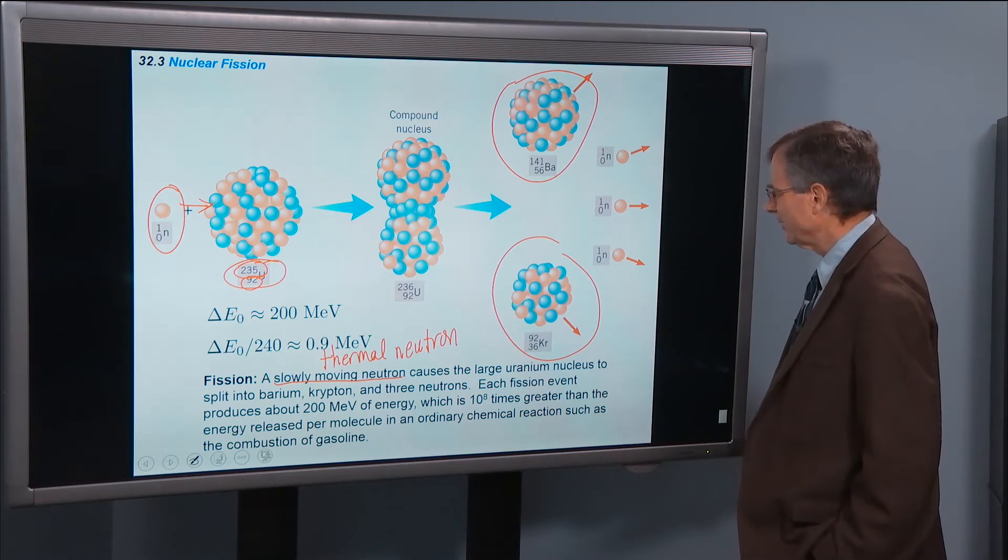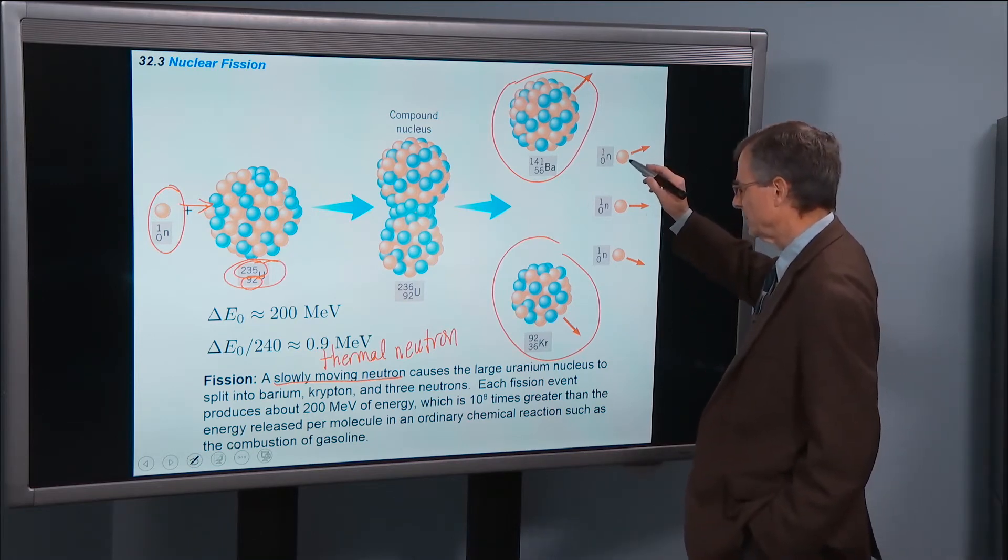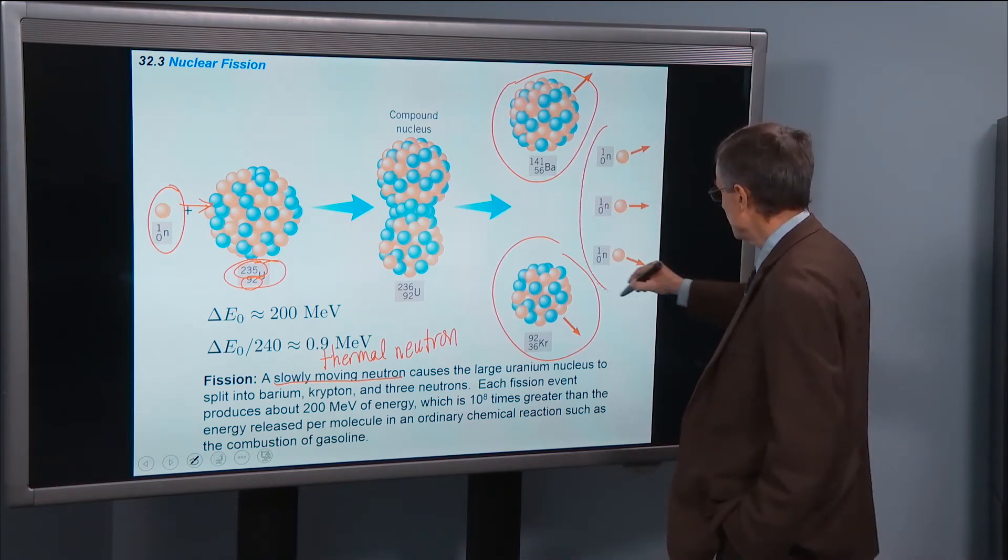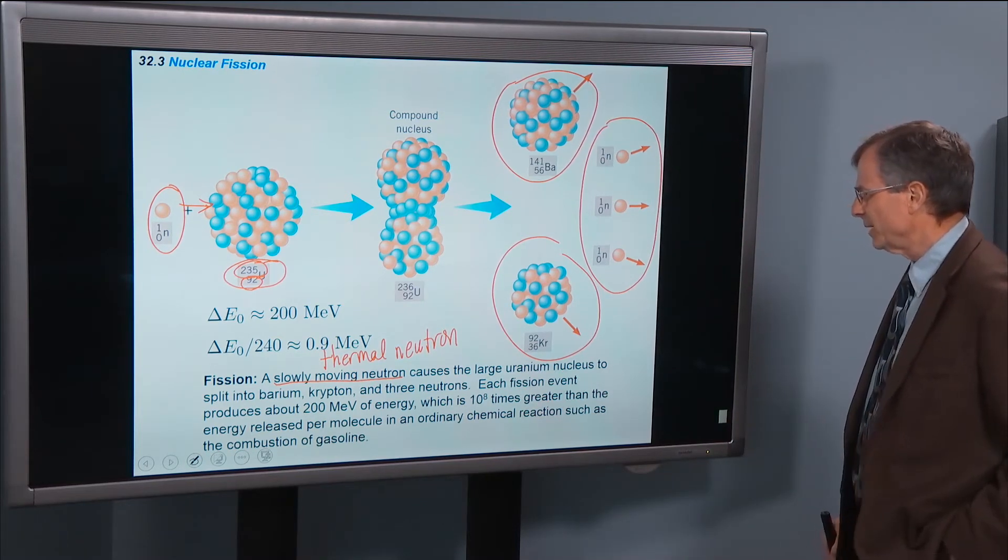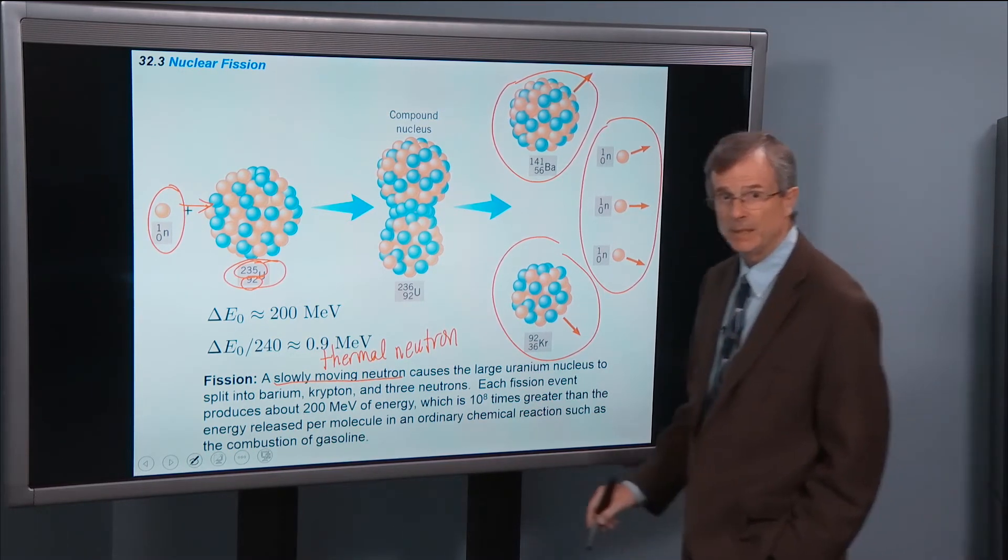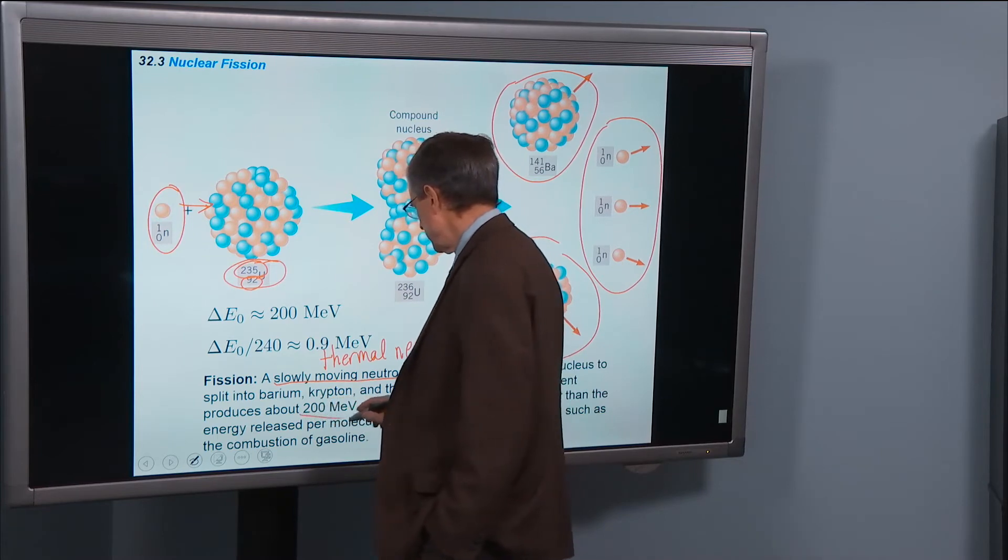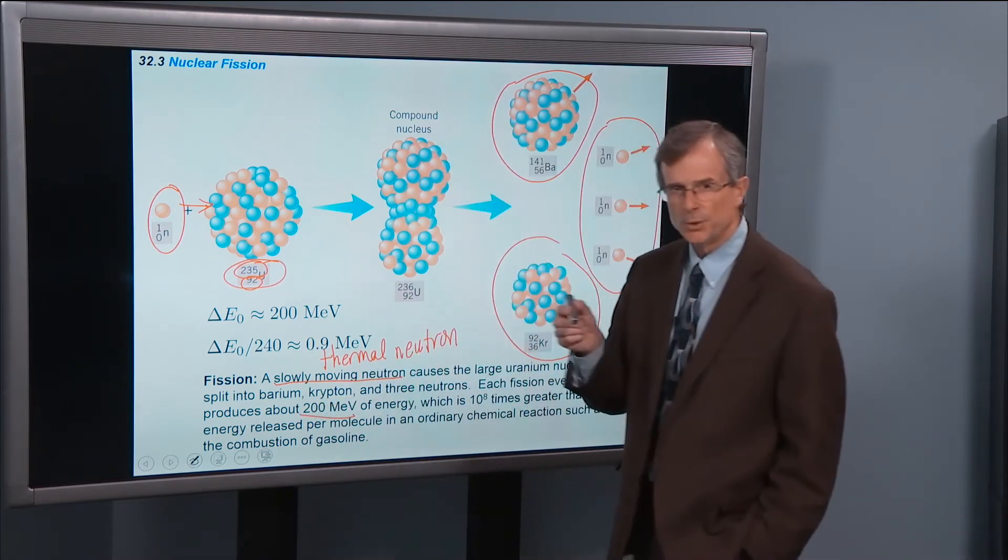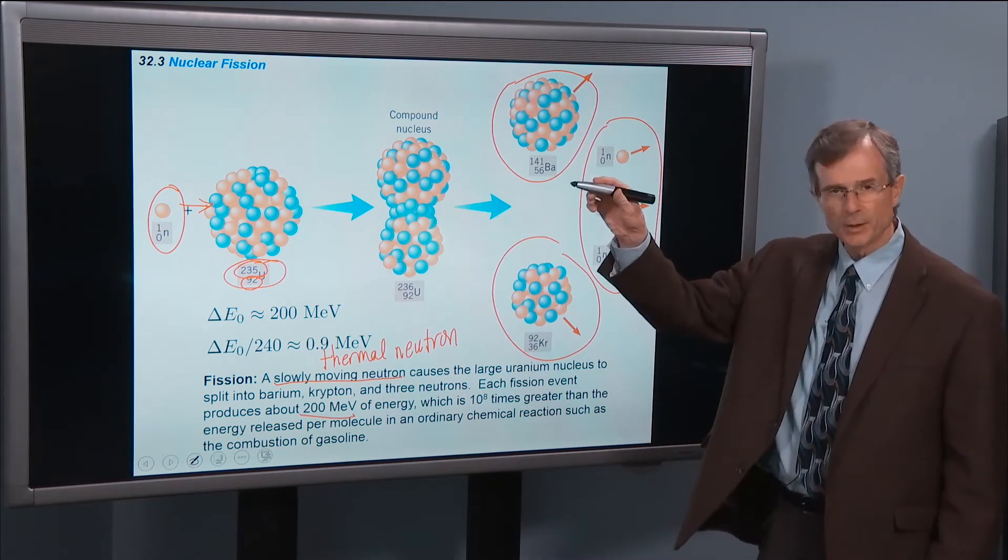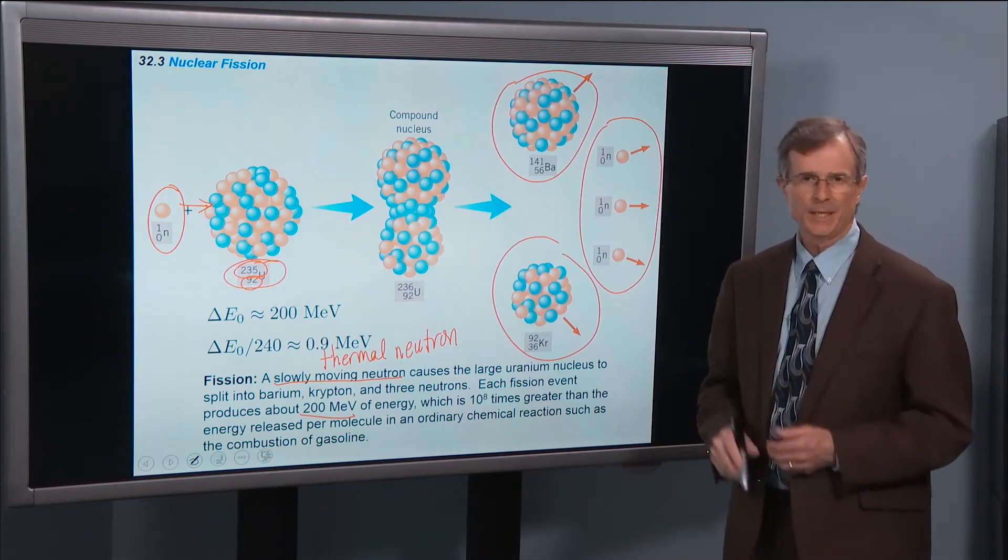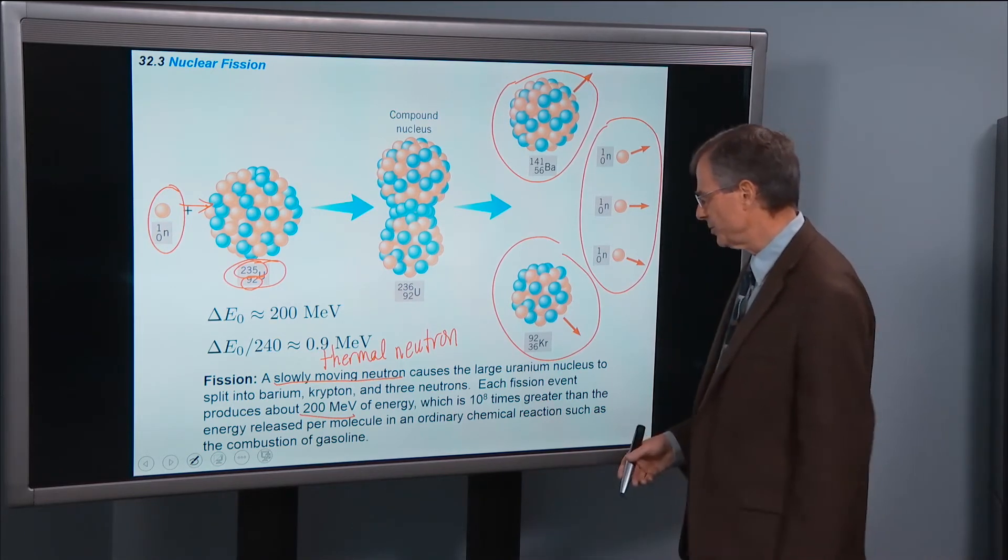Barium, krypton, and three neutrons, and each fission event produces about 200 MeV. So that's the energy produced. We talked about moving to a higher spot on that binding energy per nucleon. This is the energy that's released.